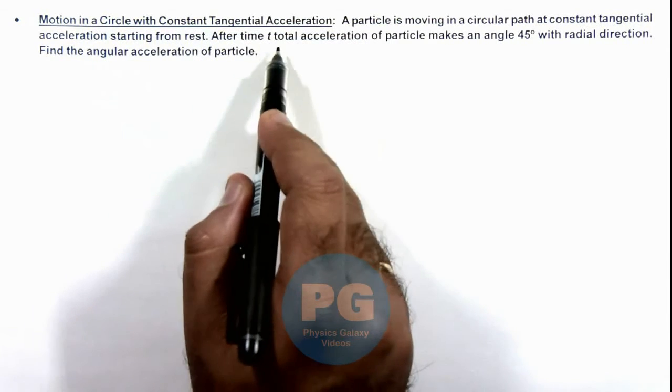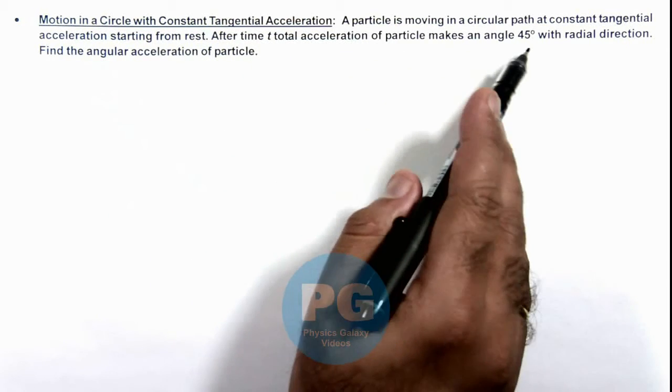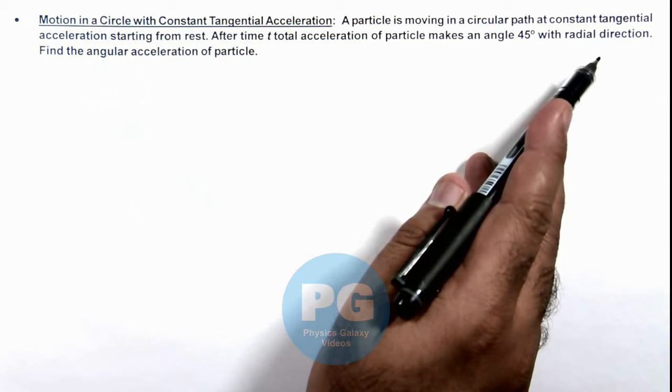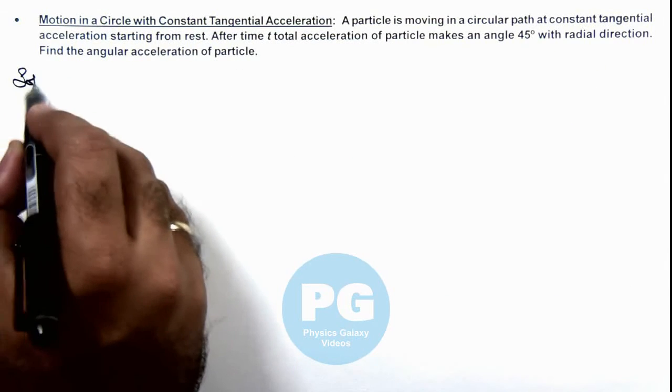After time t, the total acceleration of the particle makes an angle of 45 degrees with the radial direction. We are required to find the angular acceleration of the particle.